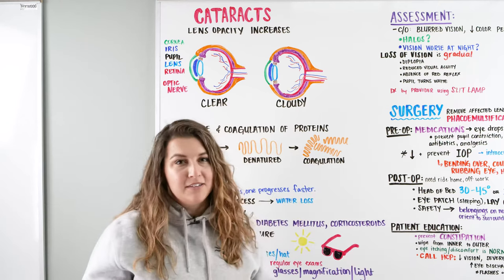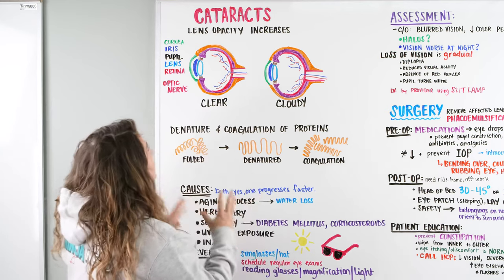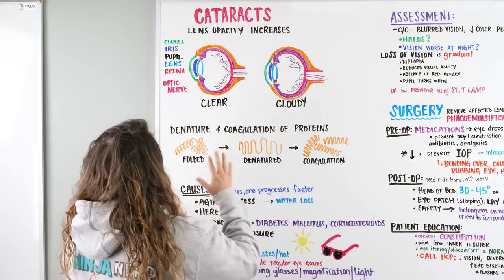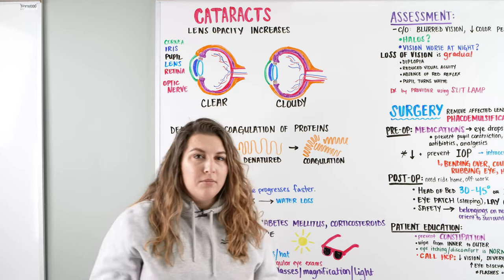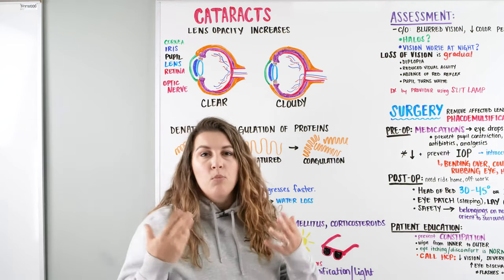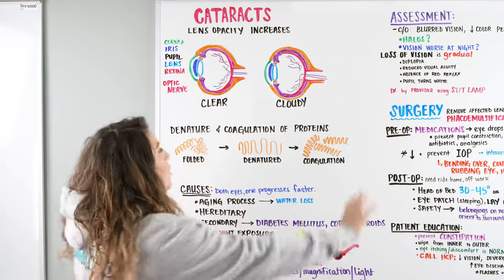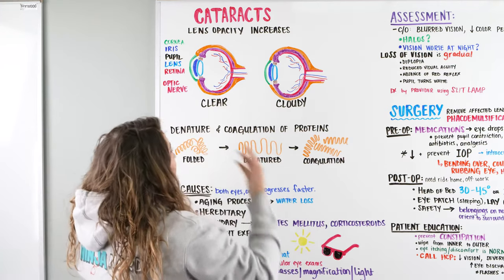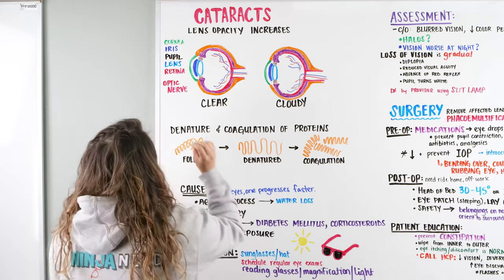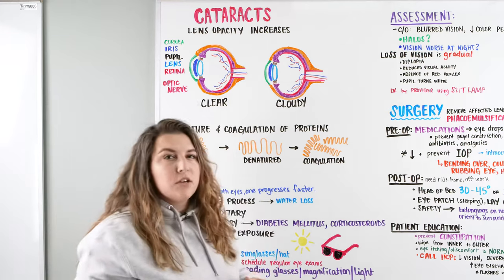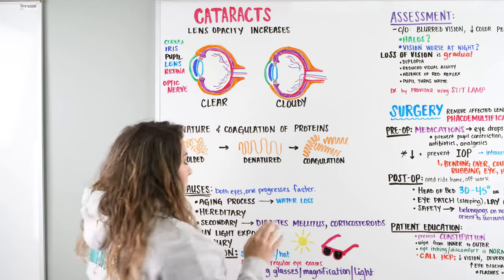We're going to be talking about cataracts, and when we focus on cataracts what we're specifically talking about is the lens — specifically that the lens opacity increases. It's when the lens goes from a clear view to a cloudy view. Let's quickly run through these two diagrams here of the eye, going through these structures and reorienting ourselves so we can understand cataracts way better.